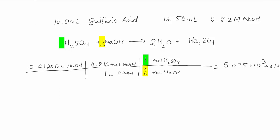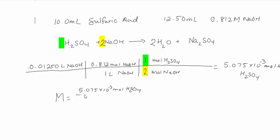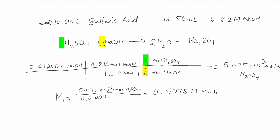Now I use the definition of molarity: I have 5.075 times 10⁻³ moles of H₂SO₄ and I divide by the original volume — 10 milliliters converted to 0.010 liters. Dividing gives 0.5075 molar. I only have 3 significant digits, so I can only report 3 significant digits.